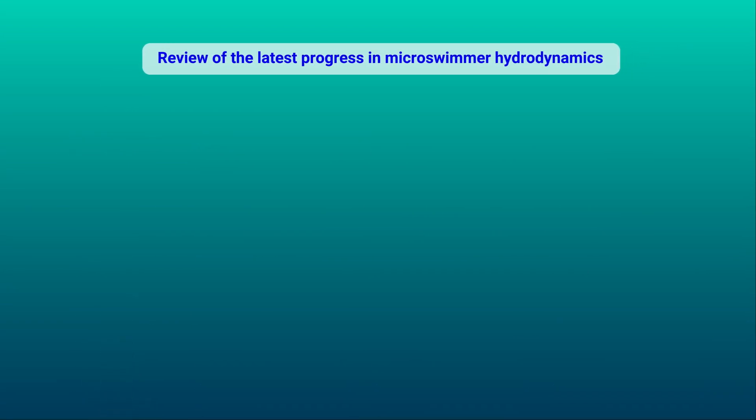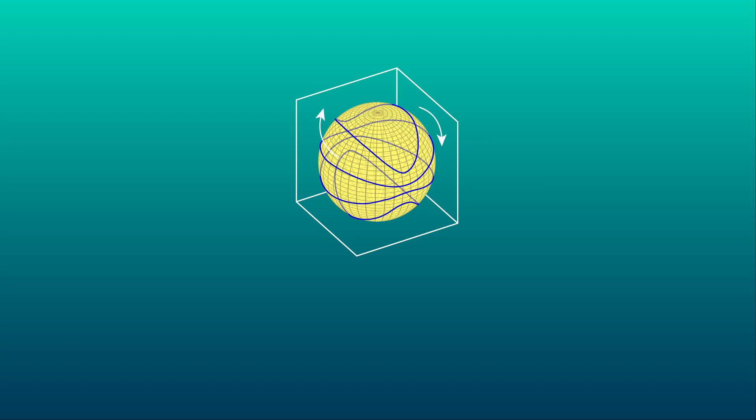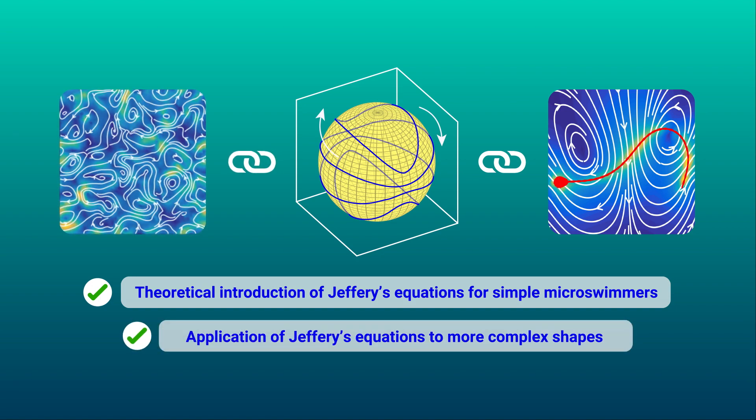The article provides a theoretical introduction on Jeffrey's equations for simple micro swimmers and considers how the equations can be used to study micro swimmers with more complex shapes.